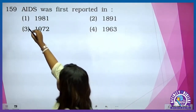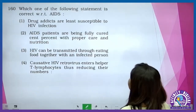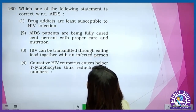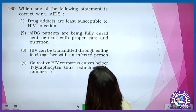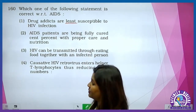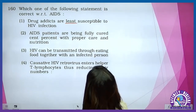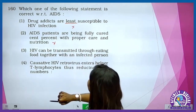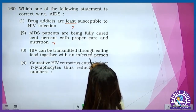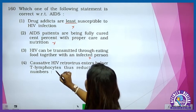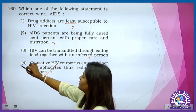AIDS was first reported in 1981. Which one of the following statements is correct with respect to AIDS? Drug addicts are not least susceptible to HIV infection — they are directly susceptible. HIV patients are being fully cured cent percent with proper care and nutrition — also incorrect. HIV can be transmitted through eating food together with an infected person — this is incorrect. Positive HIV retrovirus enters T lymphocytes thus reducing their number — so this is the correct statement.